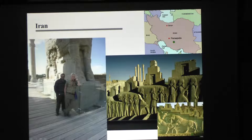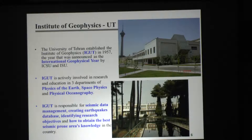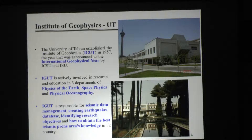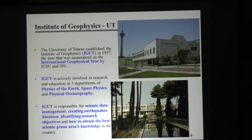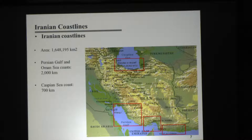A few photos of Persepolis — and this is Mike Risk, we went to Persepolis one day. The Institute of Geophysics was established in 1957, the year announced as the International Geophysical Year by ICSU. At the moment, there are three groups active there: Physics of the Earth, space physics, and physical oceanography. I work with the physical oceanography group. The Institute also has national responsibilities for seismic data management, creating earthquake databases, and defining related research topics.